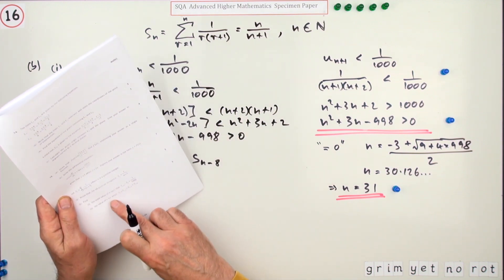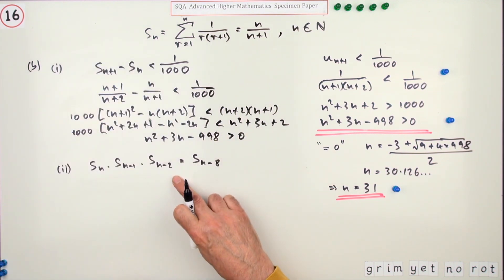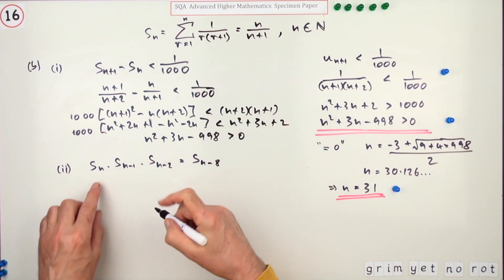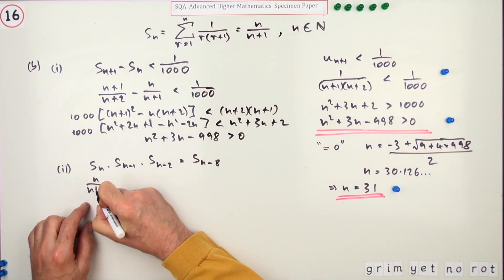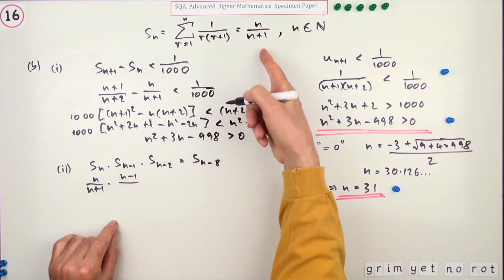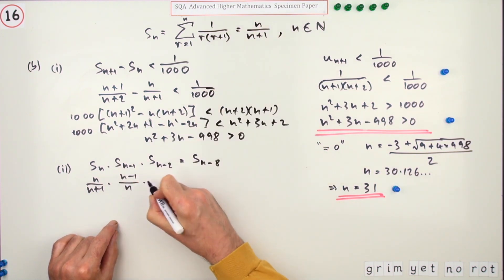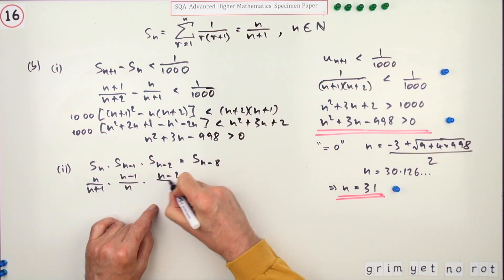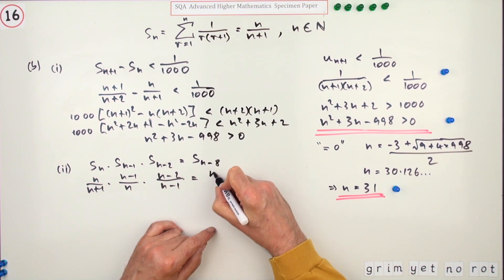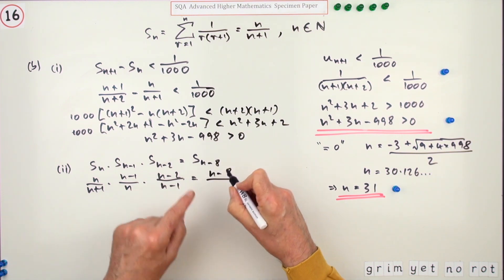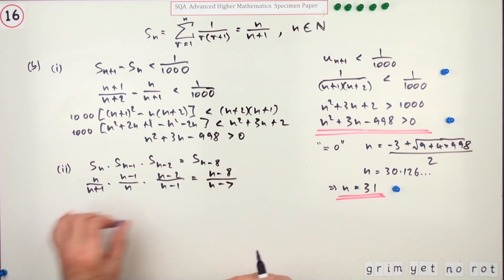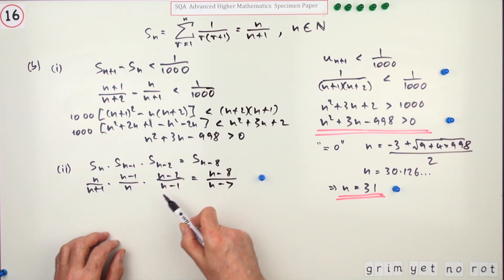For the last two marks, find the value of n for which the product of certain sums equals a particular sum. Since S(n) = n/(n+1): S(n−1) = (n−1)/n, S(n−2) = (n−2)/(n−1), and S(n−8) = (n−8)/(n−7). Writing those out and recognising the cancellations gets a mark.